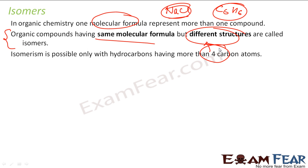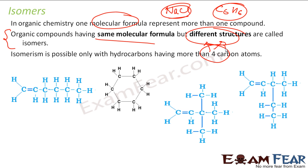This is possible only for hydrocarbons with more than four carbon atoms, because that is when you can have chains and branch chains. If you don't have branches, you won't have isomers, or you can have cyclic structures. For anything less than four carbon atoms, it's not possible to have isomers. You can try that — take any compound with less than four carbon atoms and you'll see isomers are not possible.